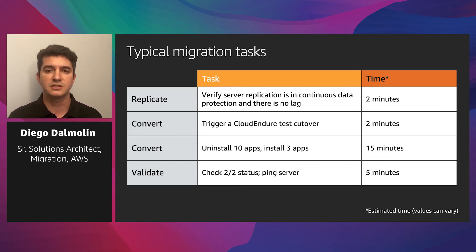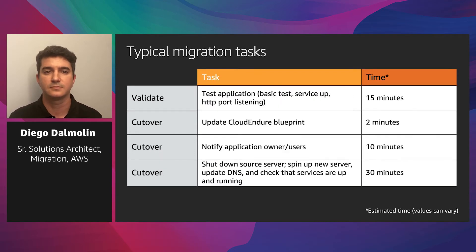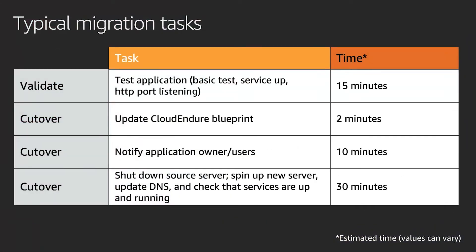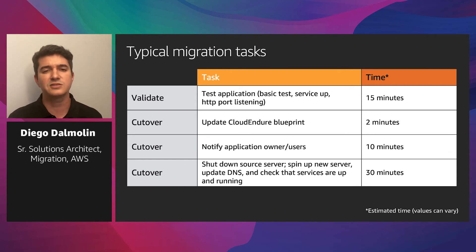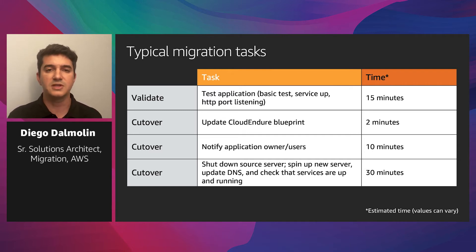You have to check if the converted servers are booting up and returning a status of 2/2 in the Amazon EC2 screen. Test if the migrated application is working as expected, if the application is up and running, and if it can be accessed by test users. You have to update the CloudEndure blueprint configuration again to change settings from test environment to production. Notify users about the maintenance window, and as final steps, shut down source servers, cut over the migration, update DNS records, and check if everything is working.